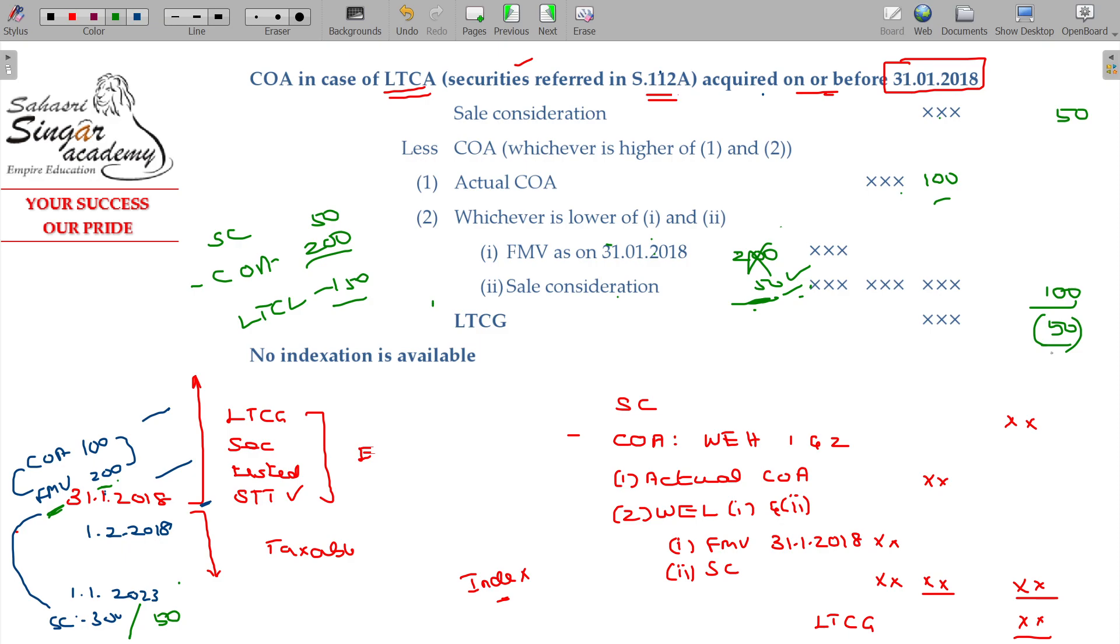50 minus 100, 50 rupees will be the loss. Because of this benefit, you cannot claim more loss. More loss claim cut off in absolute sense on 31st January, and the benefit and the fair market value claim. Now understand this? Is it clear? Make a note of it.